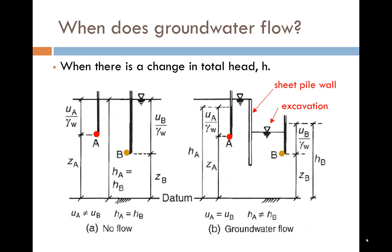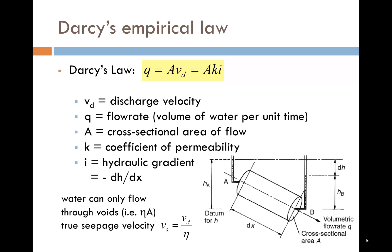This will cause the pore pressures to equalise at A and B. Darcy's law can be applied to flow in soils and it states that the flow rate Q is given by the cross-sectional area of the flow A, times the permeability of the soil K, times the hydraulic gradient I. The diagram explains that the hydraulic gradient is the head loss, in this case minus dH, divided by the length over which it is lost, dx.